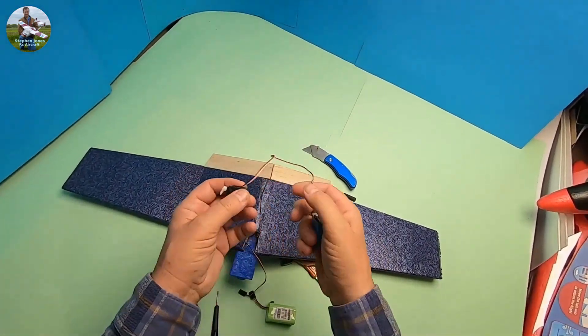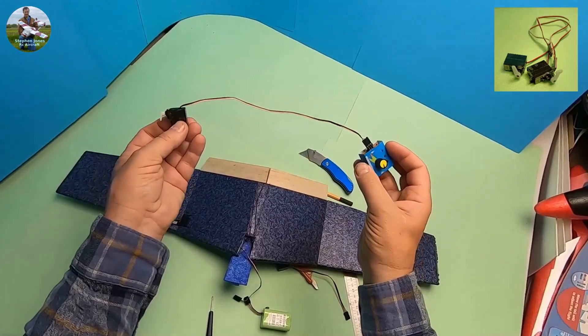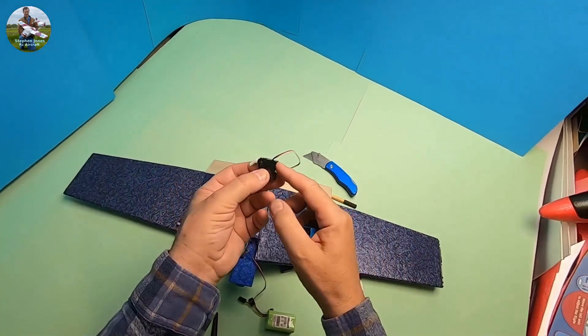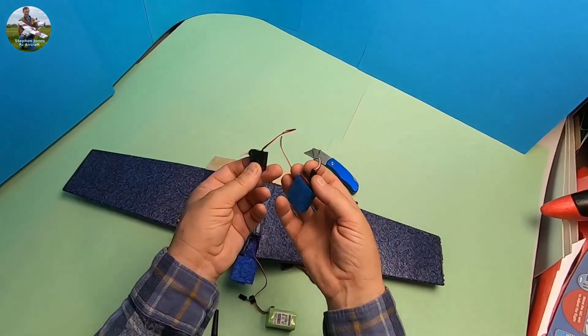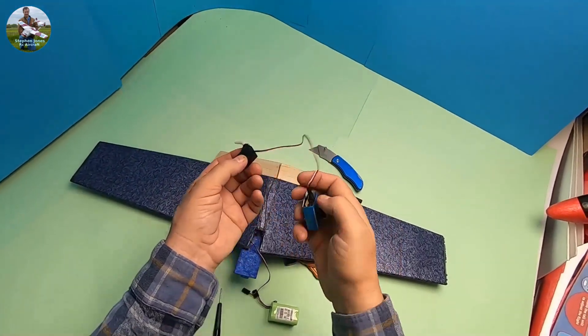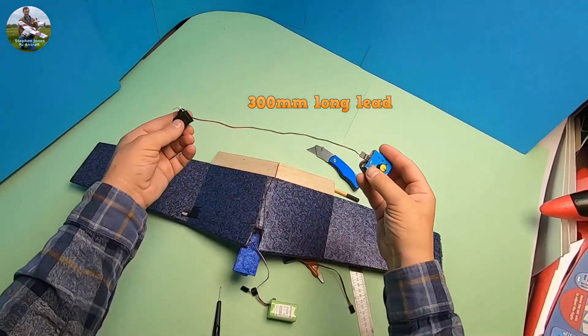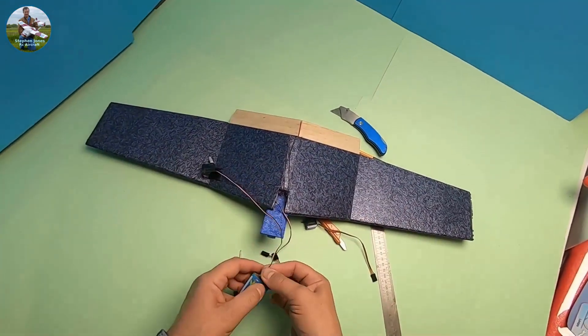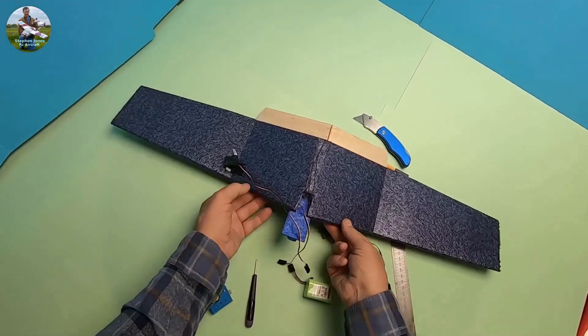I've also resoldered a new cable on there because I want it 300 millimeters long. So I've unsoldered the old one and put a servo extension lead on and soldered it in so that it now has a long lead that reaches into the cockpit area.